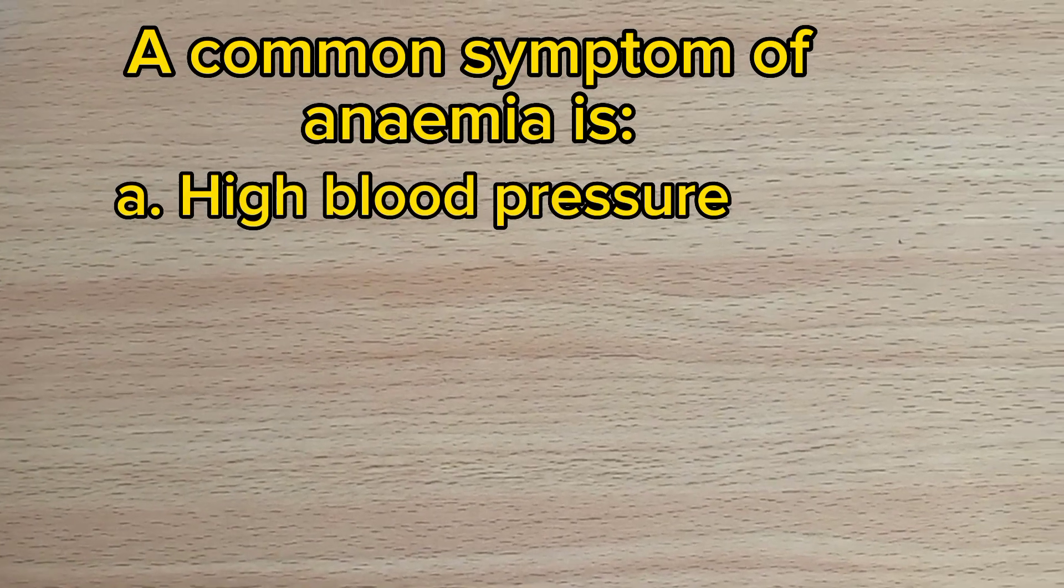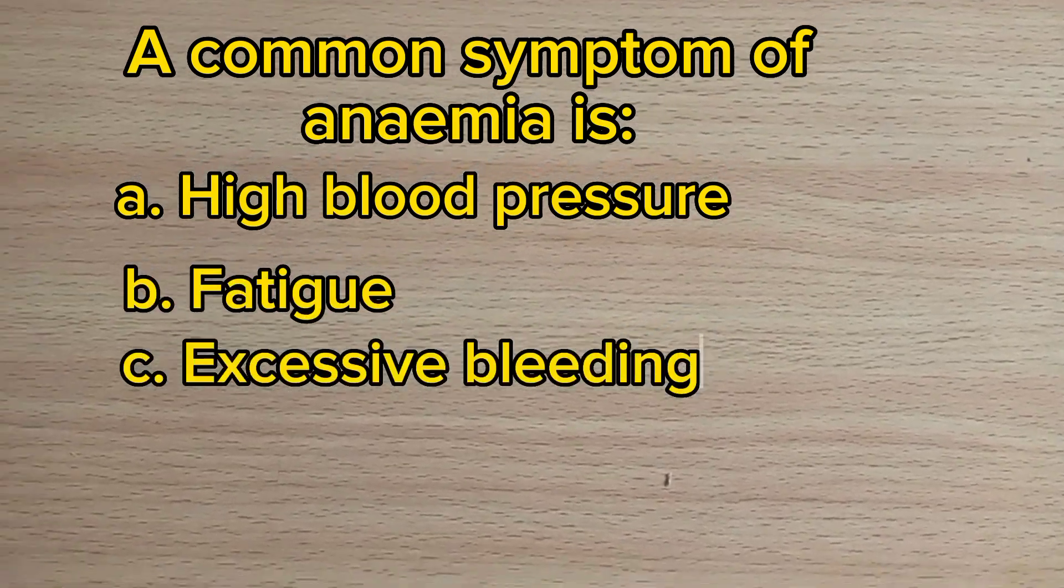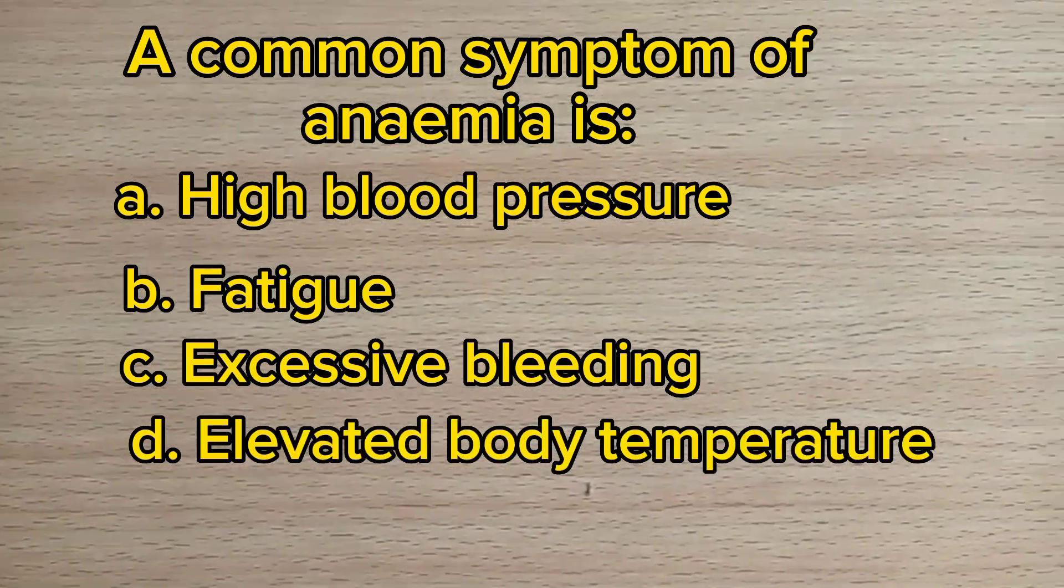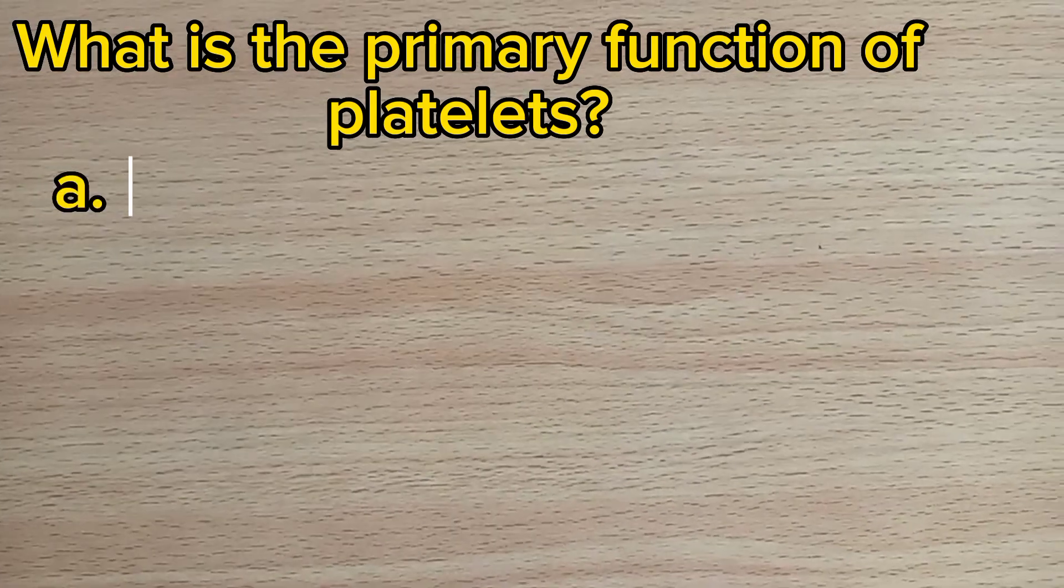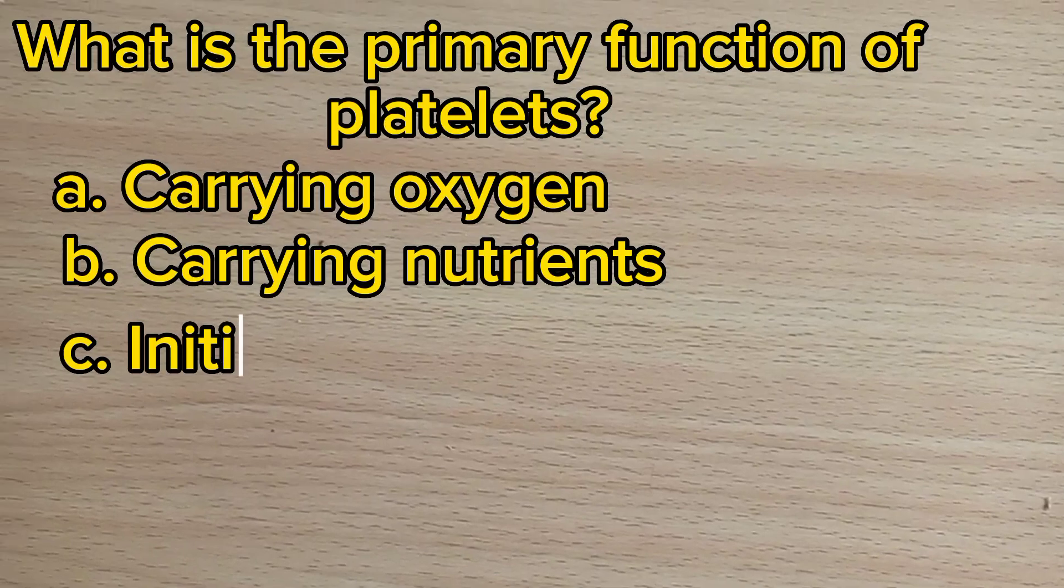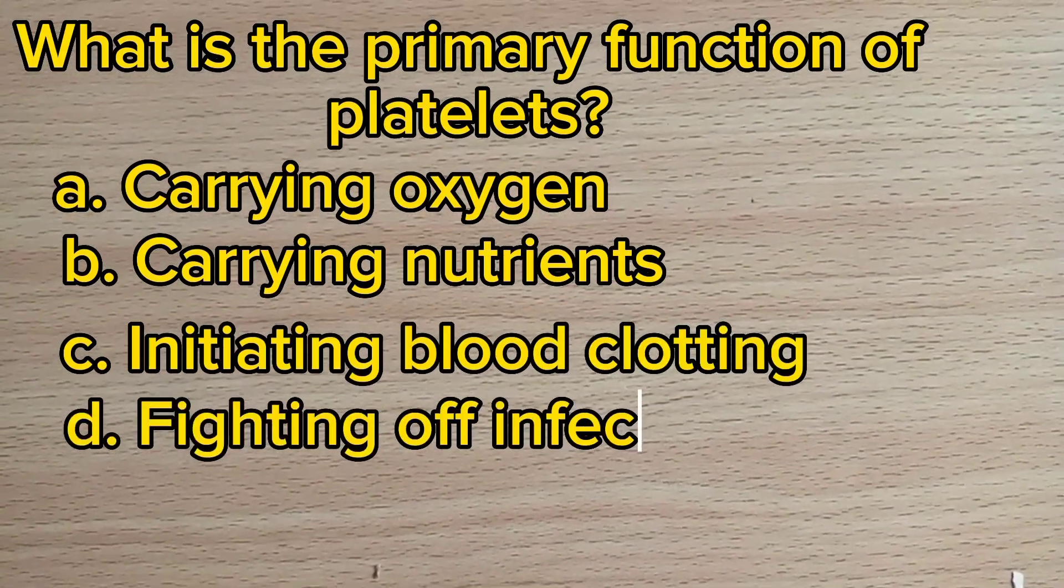C. Basophils, D. Monocytes. The answer is A, neutrophils. Number sixteen: A common symptom of anemia is: A. High blood pressure, B. Fatigue, C. Excessive bleeding, D. Elevated body temperature. The answer is B, fatigue.